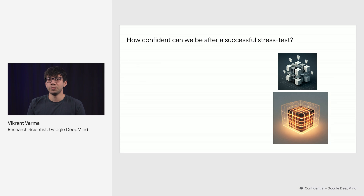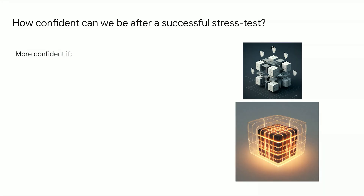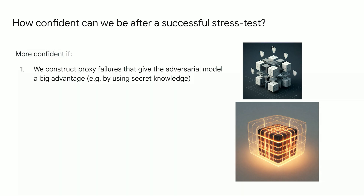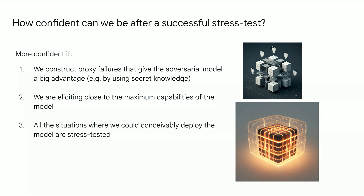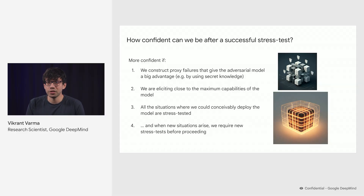I want to end on the question of how confident can we be after a successful stress test. It's quite hard to know. But in general, we can be more confident if the stress test gave more advantage to the adversarial model and, despite that, our alignment method succeeded — for example, because we gave it a big compute advantage in the test. We can also be confident there will not be a big distribution shift at deployment because all the situations we could conceivably deploy the model in are stress tested. And importantly, when new situations arise, we require new stress tests before proceeding.